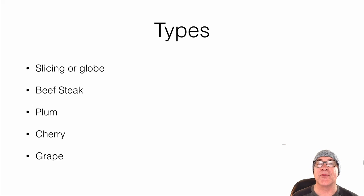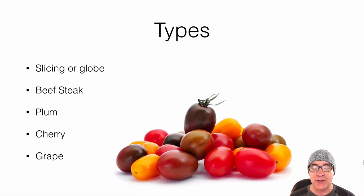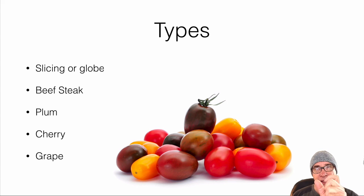The last type of tomato I'd like to introduce is the grape tomato. It is a variation of the plum tomato, although smaller — very much like a cherry tomato and about as sweet.